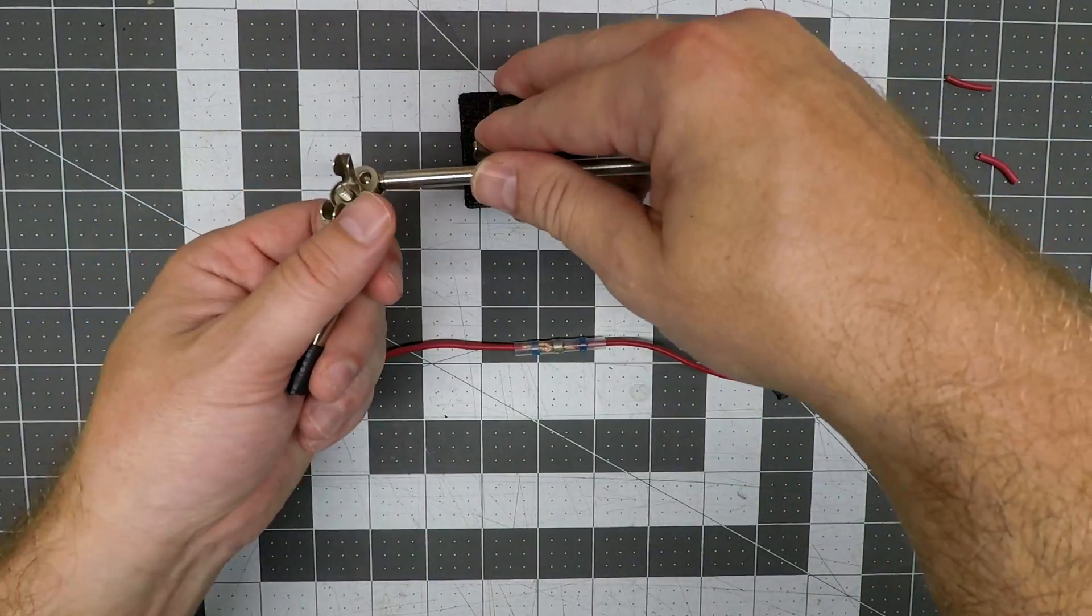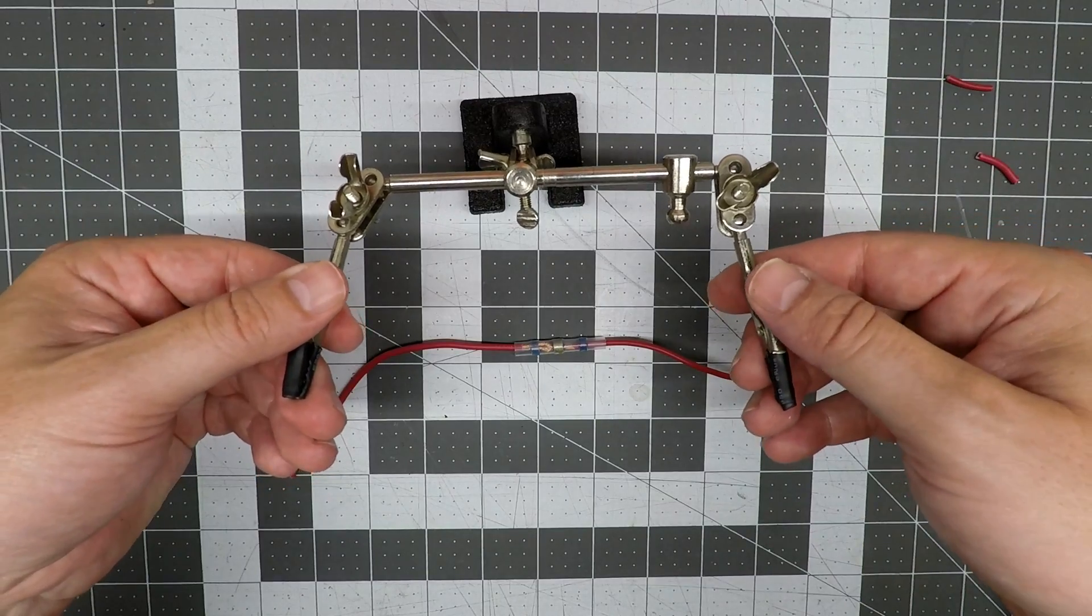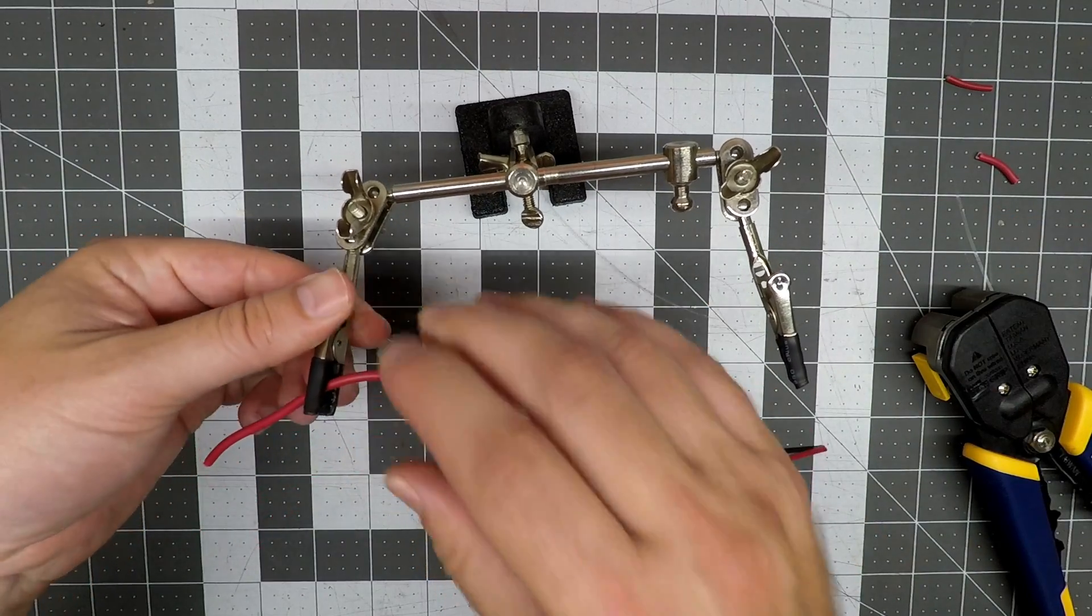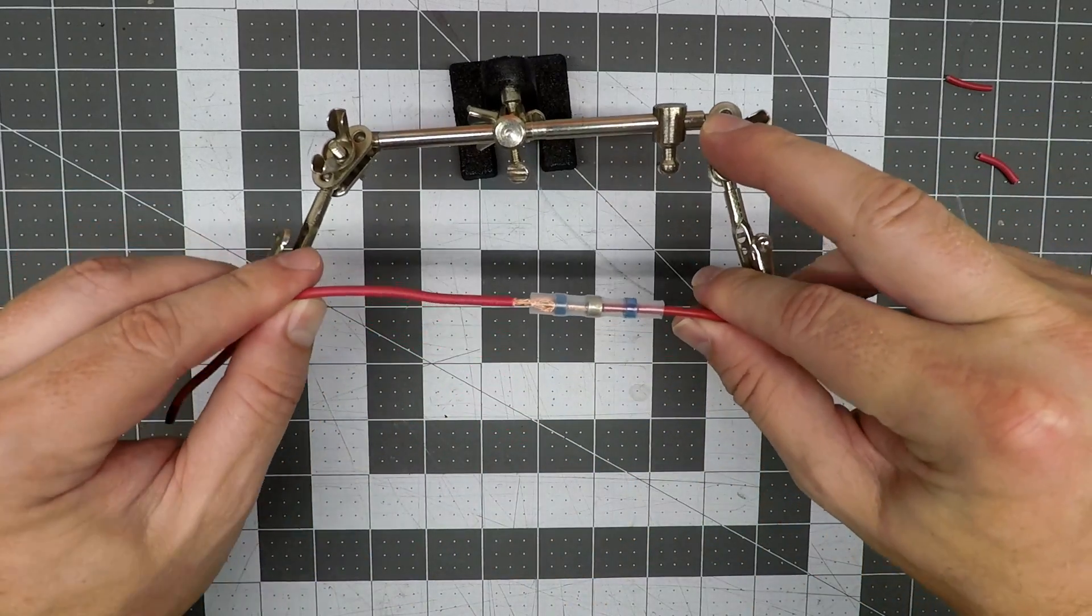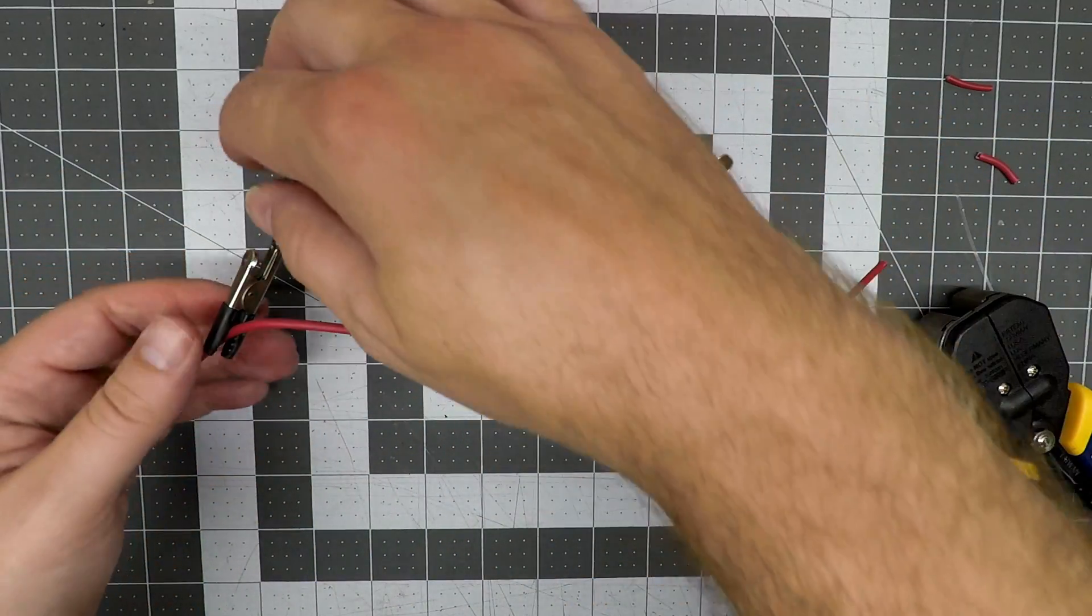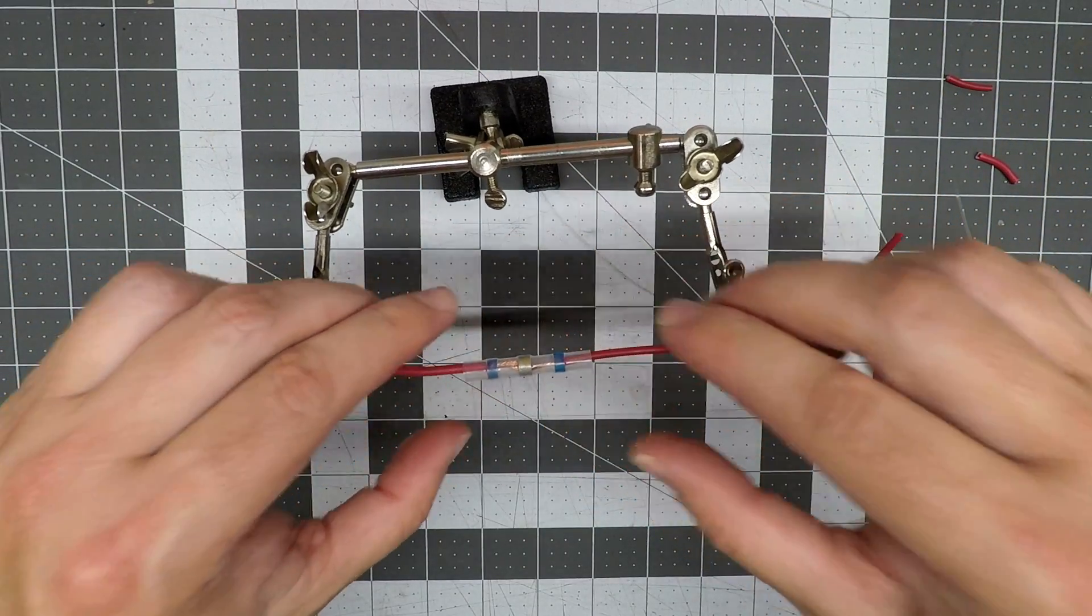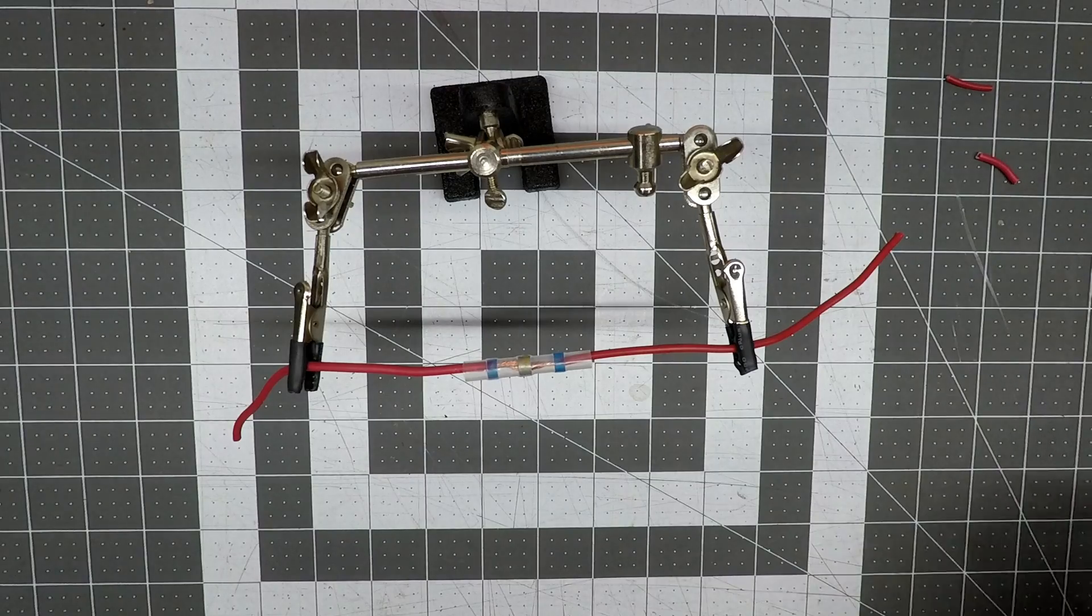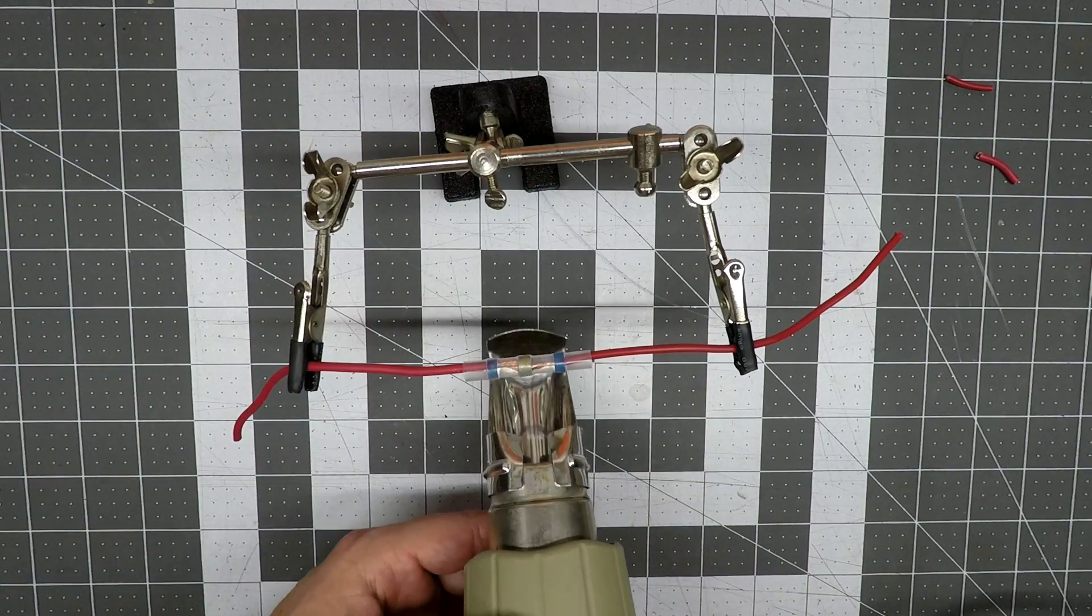We bring in our helping hands, and links to pretty much everything I use can be found in the description below, including this really great reflector for a heat gun that makes things nice and easy.